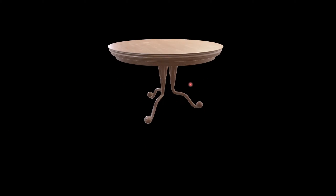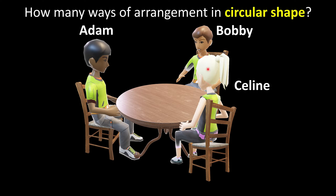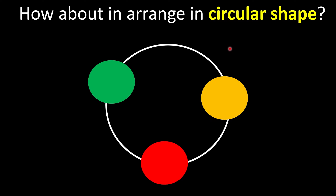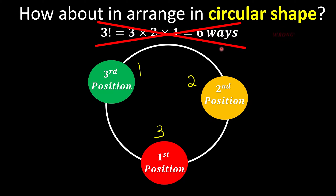Now consider a circular table instead — same three seats, but in a circular shape, with Adam, Bobby, and Celine. How many ways can they be arranged? Following the usual approach, the first position has three ways to fill, the second has two, and the third has one — giving three factorial, which is six ways. But if you do it this way, you are completely wrong.